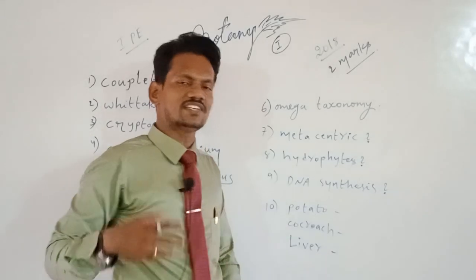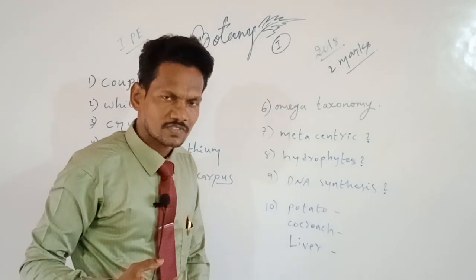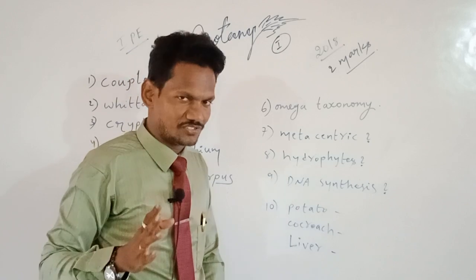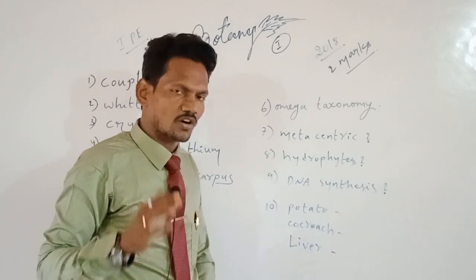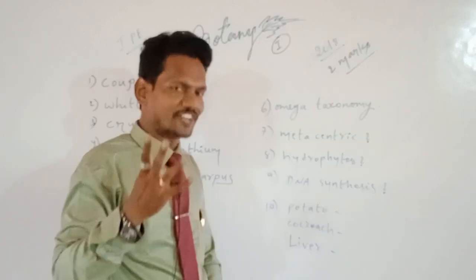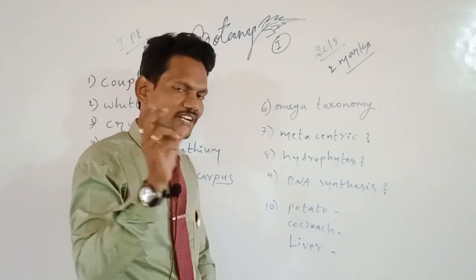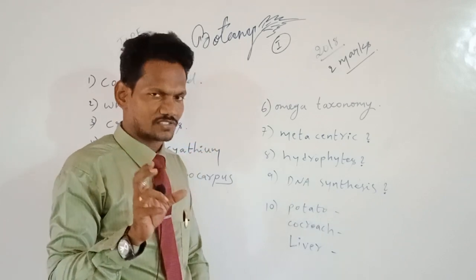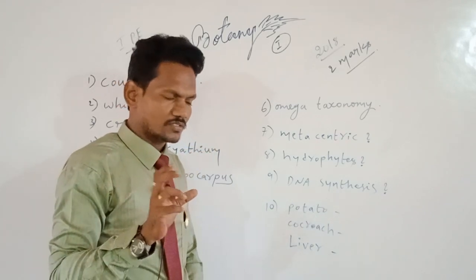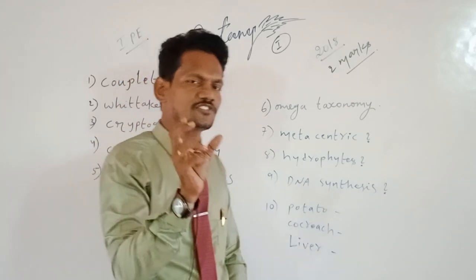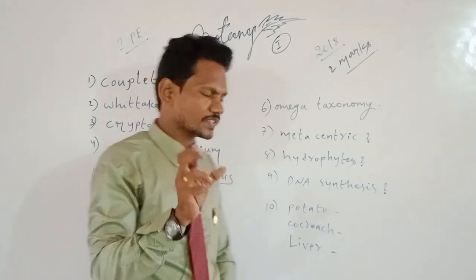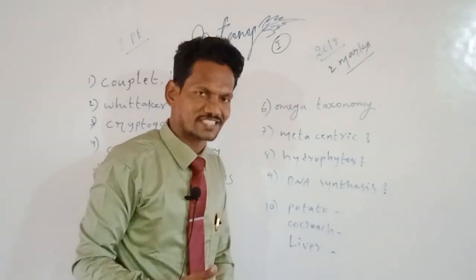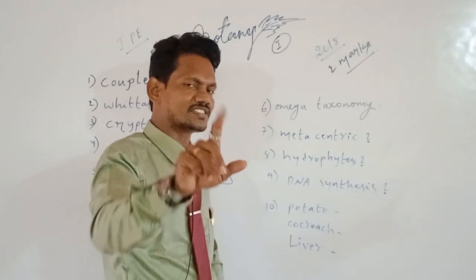Next question: in the cell cycle, in which stage does DNA synthesis occur? The answer is the S phase, or Synthesis phase. Writing that term earns two marks. In the Synthesis phase, DNA is doubled or synthesized during the cell cycle.